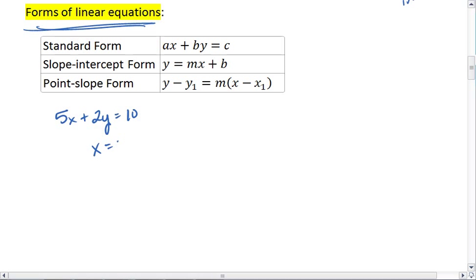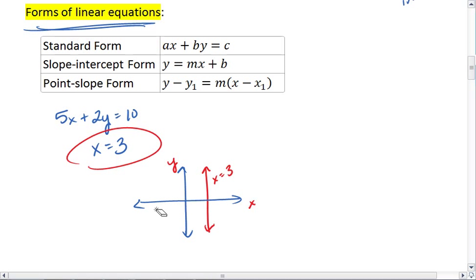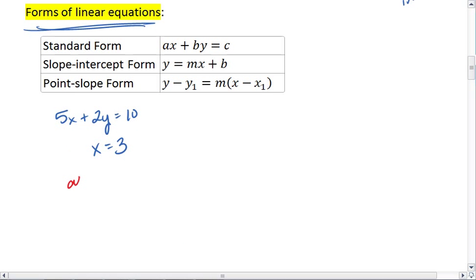The reason we like standard form is all linear equations can be written in standard form. For example, we could have the linear equation x equals 3, which is simply a vertical line at x equals 3. It's impossible to write x equals 3 in slope-intercept or point-slope form, which is why standard form is useful, because all linear equations can be written in standard form.